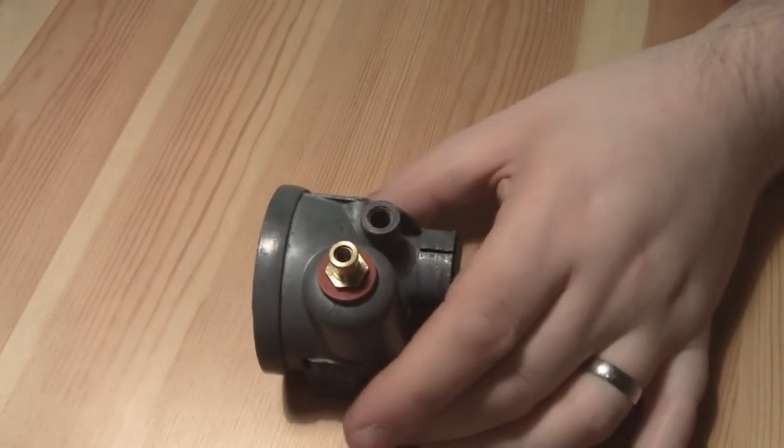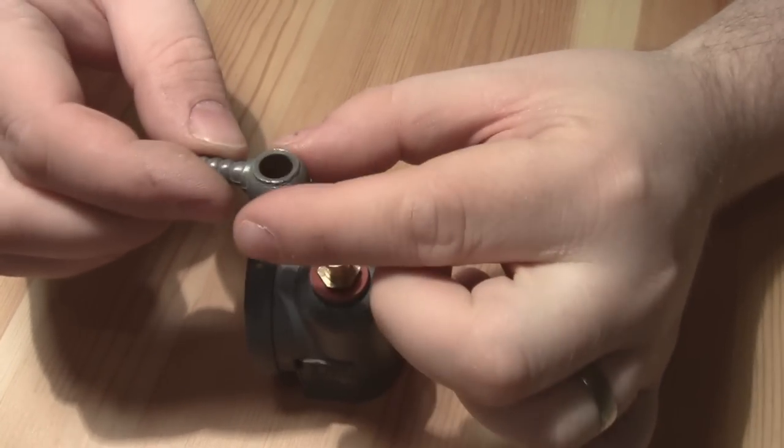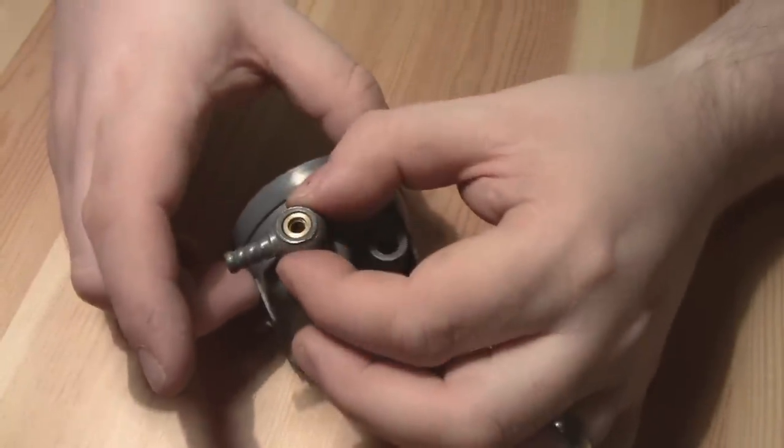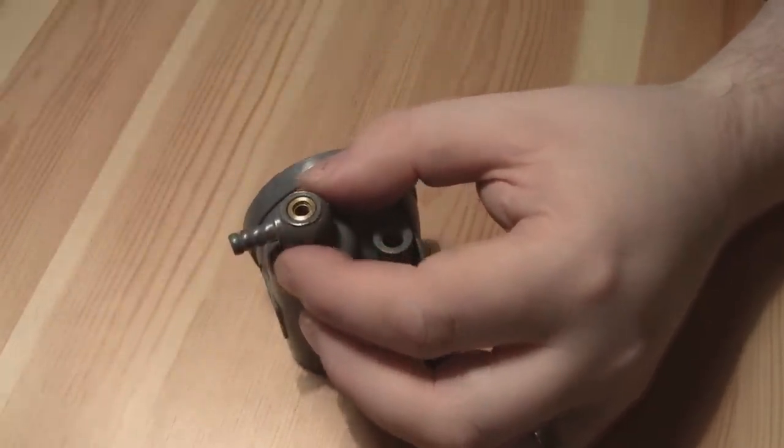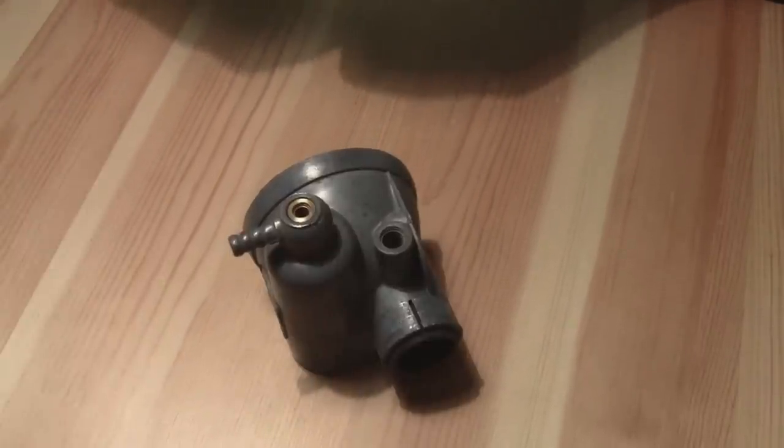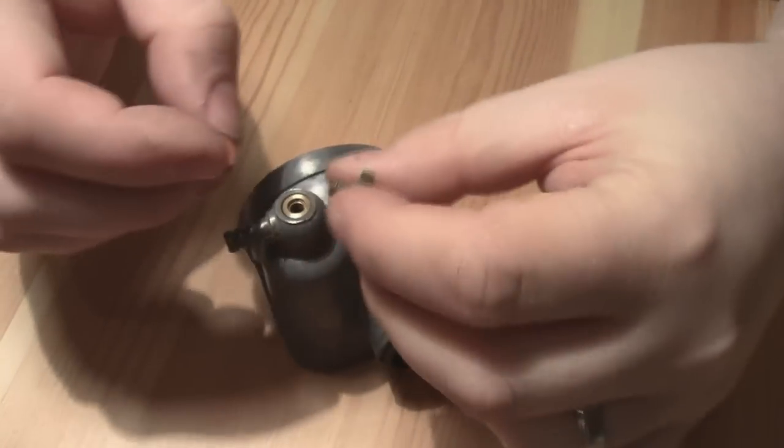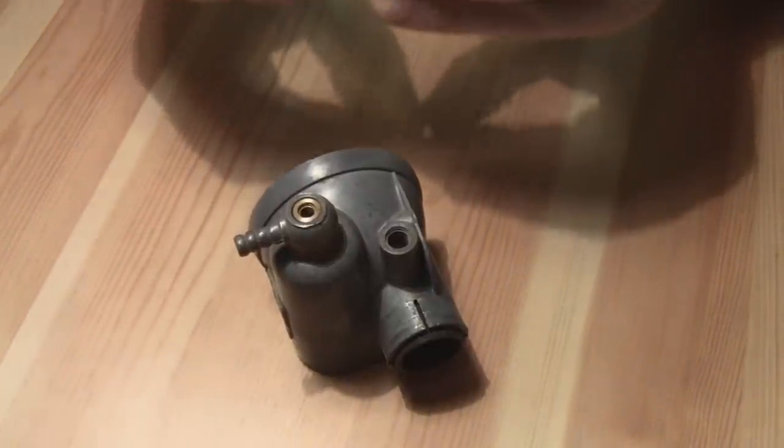So the next thing is to put the bit for the fuel line going into the carb. You just put that on pointing towards the direction of your fuel tank and then take this nut and the replacement fiber washer and that goes into that hole there.